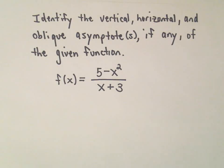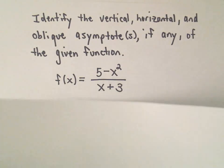Okay, here we're going to look at finding the vertical, horizontal, and oblique asymptotes, if any, of this given function. So here we've got f of x equals 5 minus x squared over x plus 3. The first thing I'm going to do is start off thinking about vertical asymptotes, since that's what it talks about first.